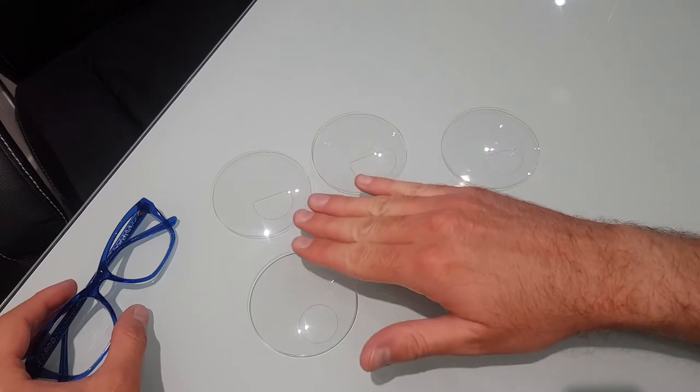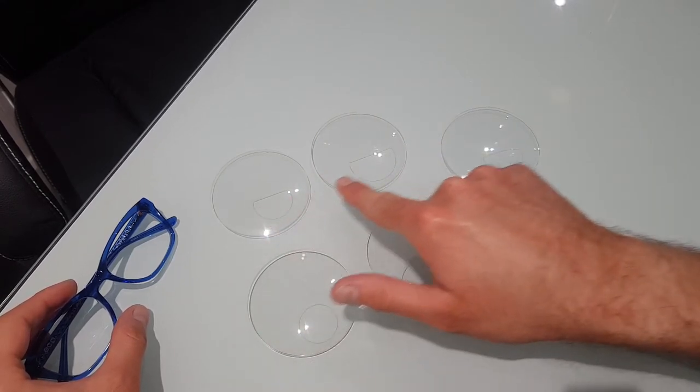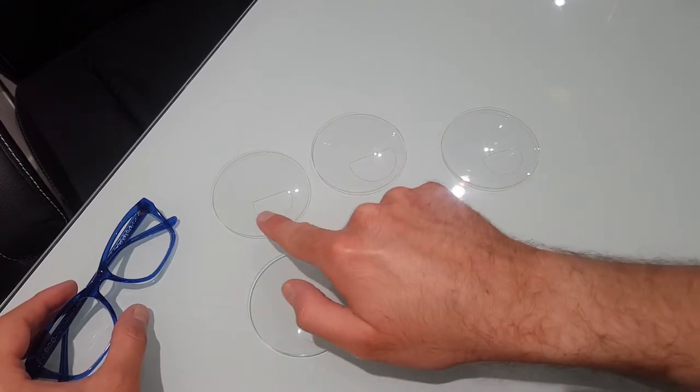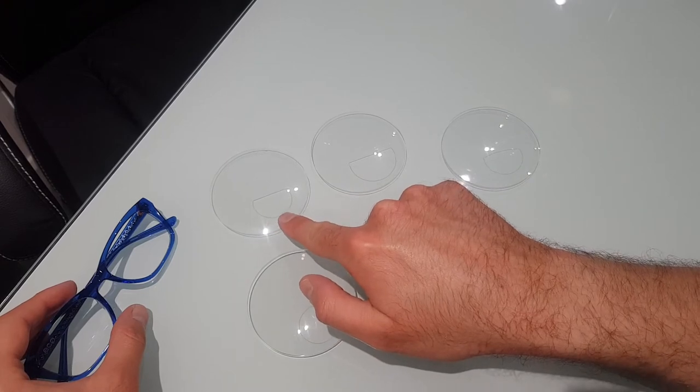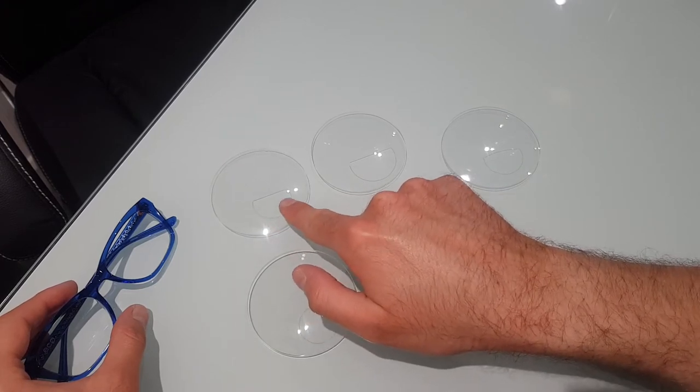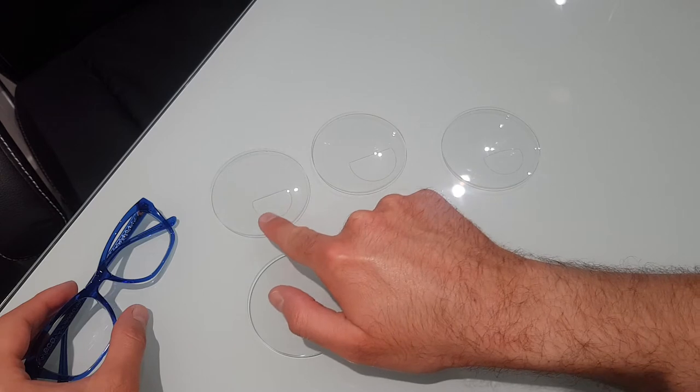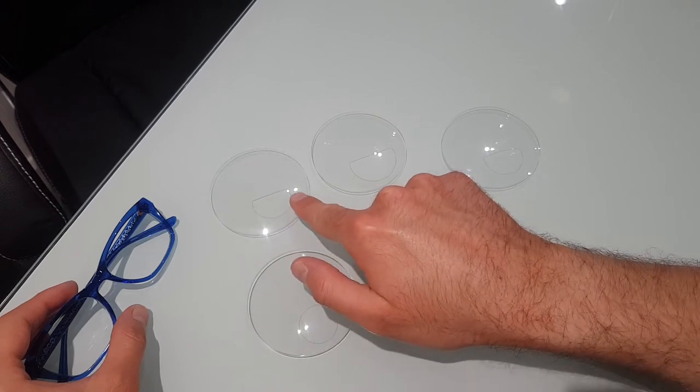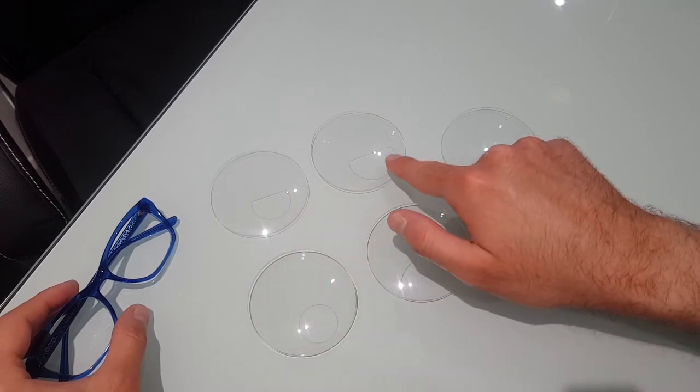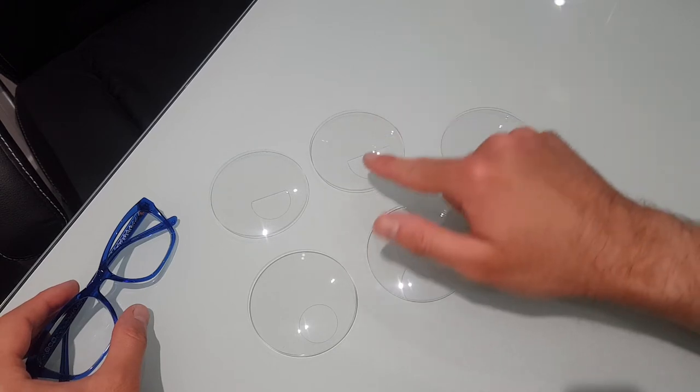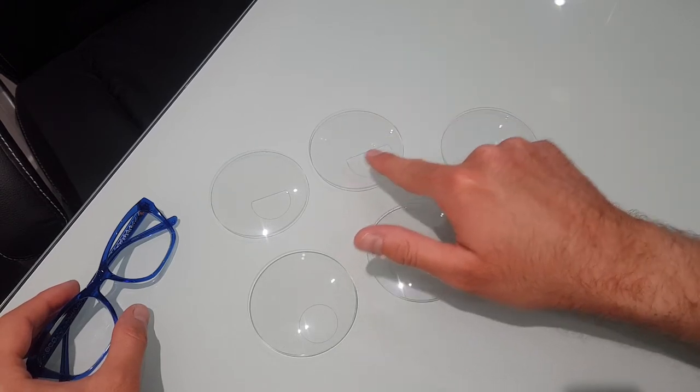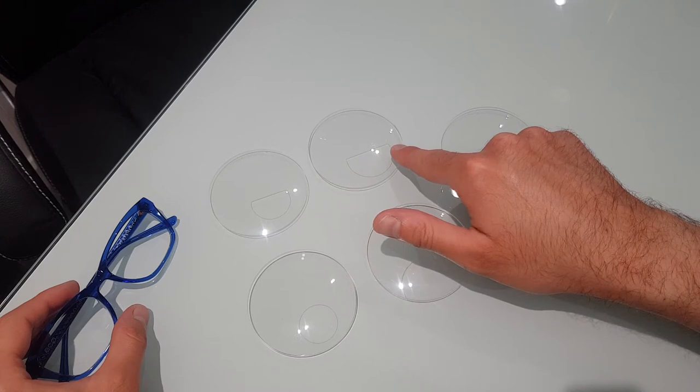When we're looking at the DSEGs, the only difference is the size and the width of the segment. So this one here is called a D28, which means it's a DSEG and the top of the segment is 28 millimeters across the top. The next one is a D35, and that means it's 35 millimeters from edge to edge.